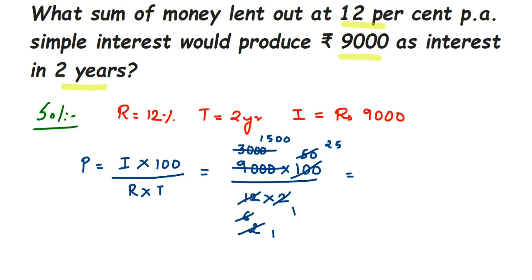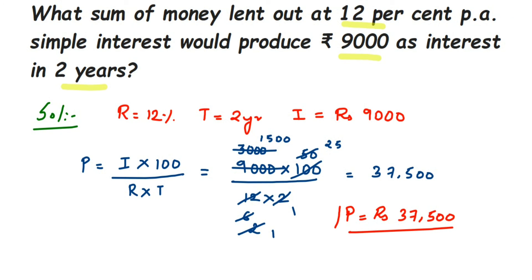Multiplying 1,500 by 25 gives 37,500. So the principal P is equal to rupees 37,500. That is the sum they are asking for in the question. I hope this question is clear. If you have any further questions or doubts, you can drop a comment — thank you so much for watching.